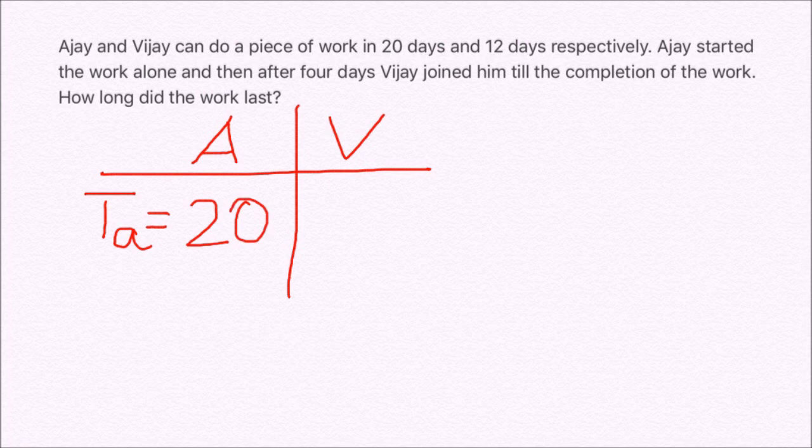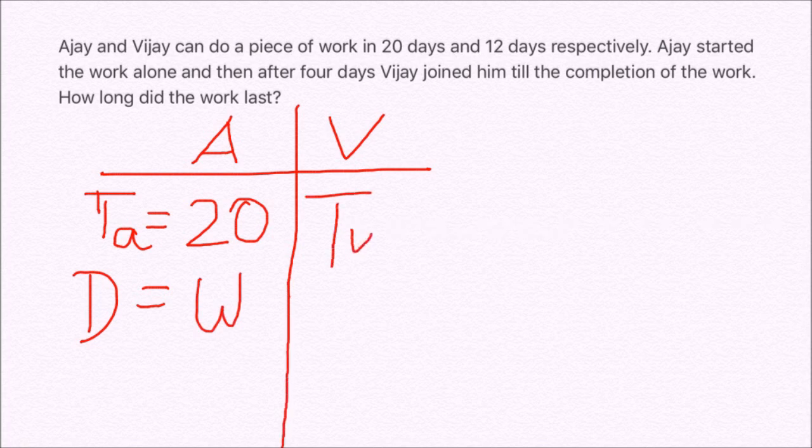The work can be equated to distance so let the work be W so our distance becomes W here. And the time taken by Vijay is 12 days. And the distance is same that is equal to work W.